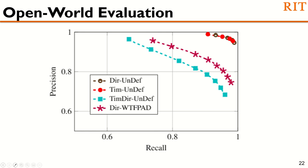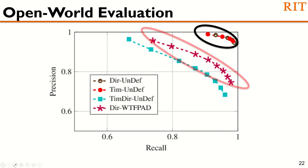All previous evaluations were in the closed-world setting. Now we talk about the more realistic open-world evaluation, performed for the undefended and WTF-PAD datasets. For the undefended dataset, direction and directional timing performed relatively identically — for example, when tuning for precision, the precision is 0.991 for direction and 0.988 for directional timing. For WTF-PAD, however, we see a distinctive performance difference in the precision-recall curve. When tuned for precision, directional timing provides slightly higher precision and a 6% improvement in recall. When tuning for recall, we get a 6% improvement in precision with slightly lower recall than direction.